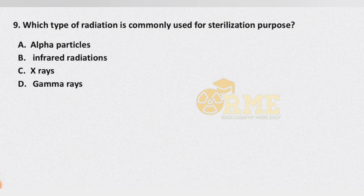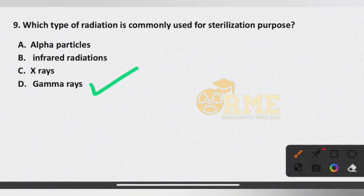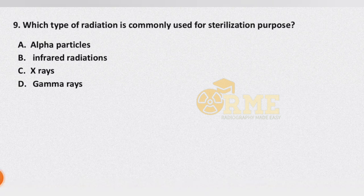Question number 9: which type of radiation is commonly used for sterilization purposes? Options are alpha particles, infrared radiation, X-rays, and gamma rays. Undoubtedly, the answer is gamma rays.